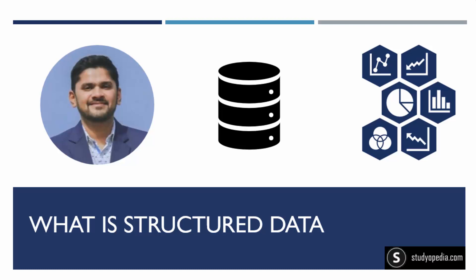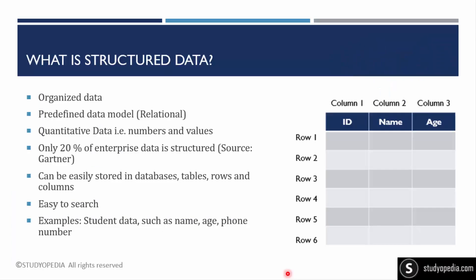Let us focus on what is structured data. Structured data is organized data — as the name suggests, it is structured. Structured data can be easily stored in the form of rows and columns, that is, tables. For example, student records stored in the form of rows and columns: rows are the horizontal part and columns are the vertical part. Student ID, name, and other fields are stored in this table format — that is structured data.